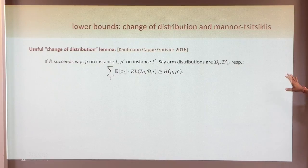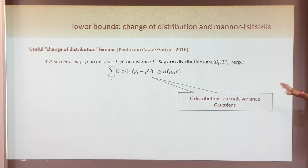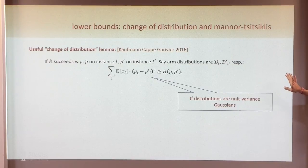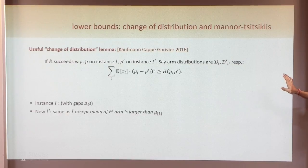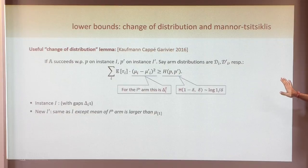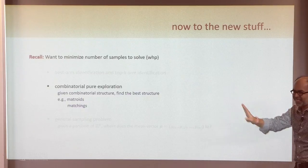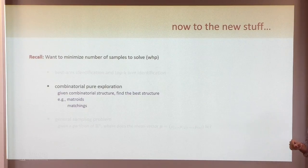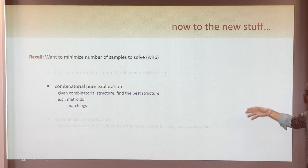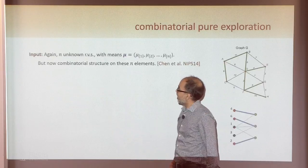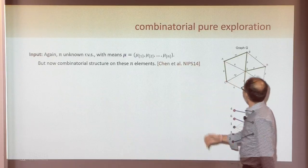How do you prove lower bounds? You prove these via change of distribution arguments, as you might expect. Let me tell you about how to extend these ideas to finding spanning trees.